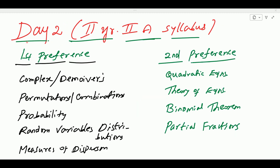Day 2 is second year 2A syllabus. Second year has full syllabus — if you have a revision in two days for 2A, one day for 2B. Complex numbers and De Moivre's theorem questions are three to four questions — two topics that are easy to revise. Also IPE-based questions and formula-based questions are easy to revise.